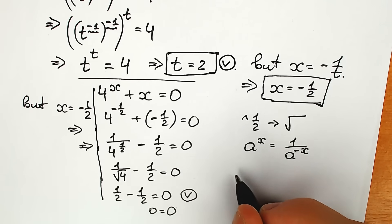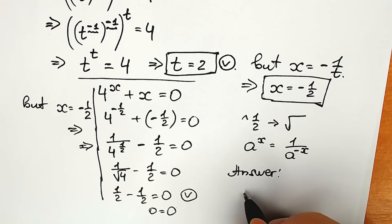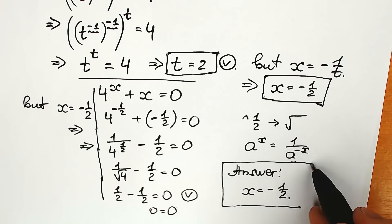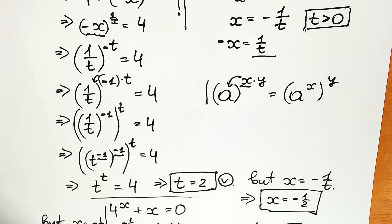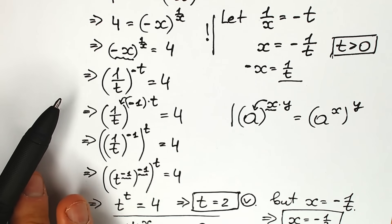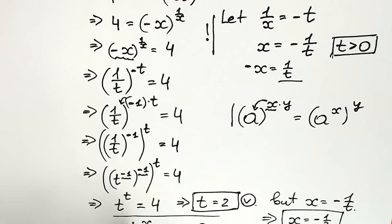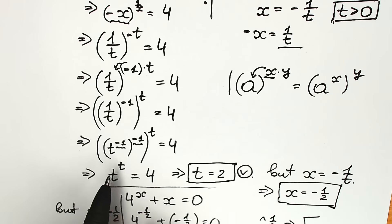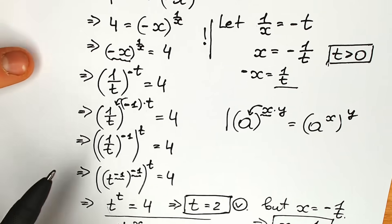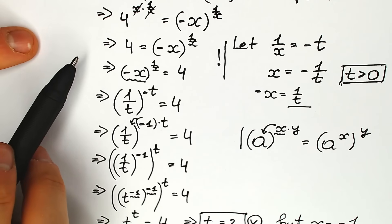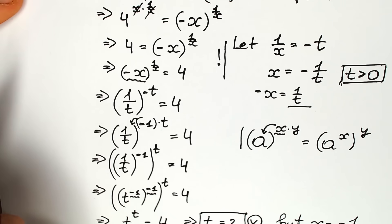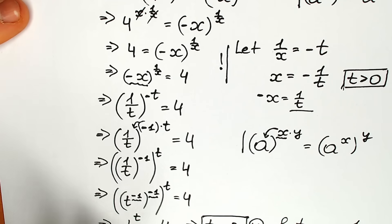Now we can see on the graph the point of intersection, confirming our answer. So x equals minus one half. The trickiest moment was the substitution step. When you pause the video you'll understand this substitution — it helps a lot, because after it we get t to the power t equals 4, from which t equals 2 very quickly. Without this substitution you might try the Lambert W function, but this substitution approach is clean and elegant.